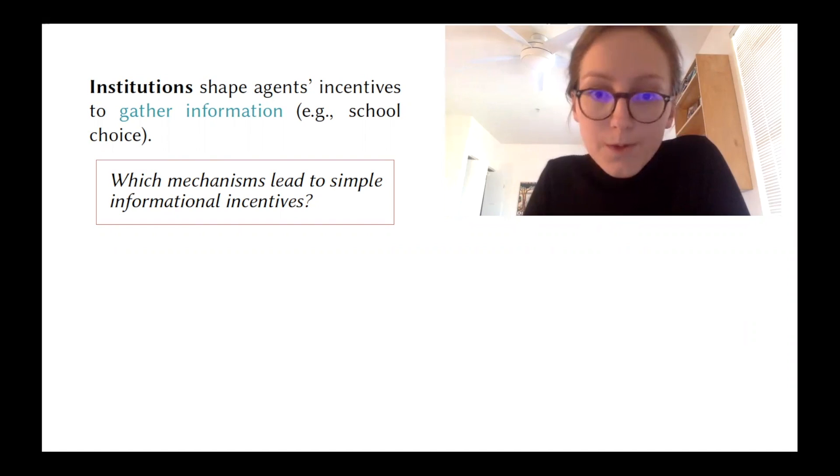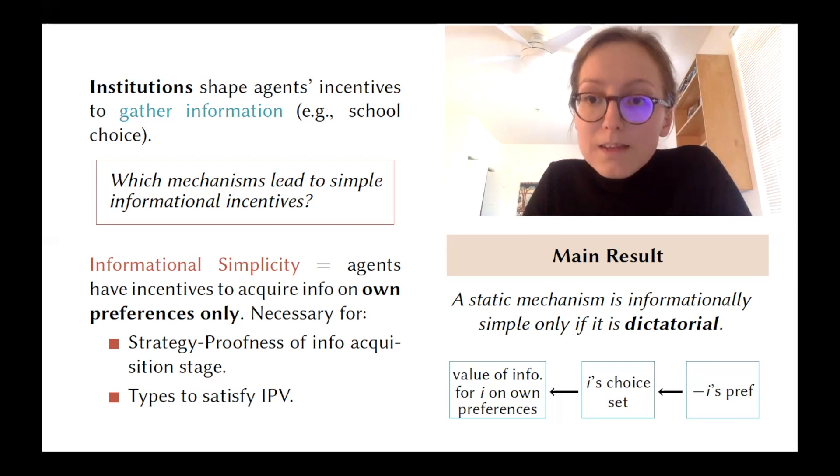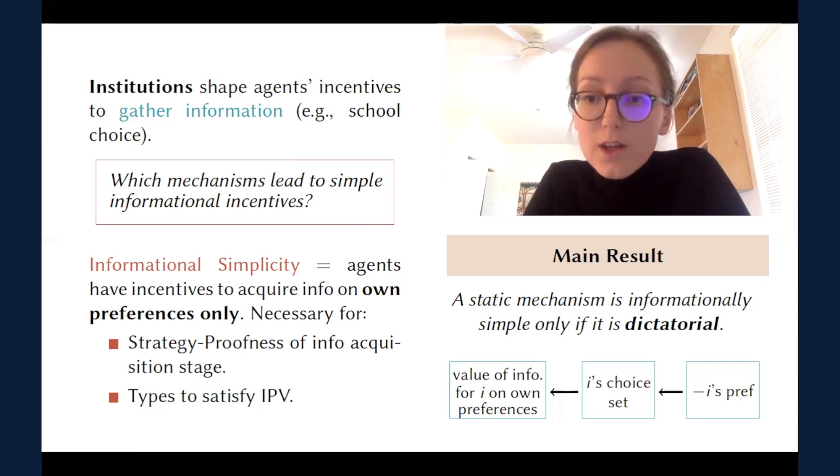The intuition is that other people's preferences impact an agent's choice set—the set of outcomes he can bring about—another mechanism which pins down the value of information on his own preferences. Hence optimally, an agent wants to learn about other people just to be able to assess how much he should invest learning about himself.